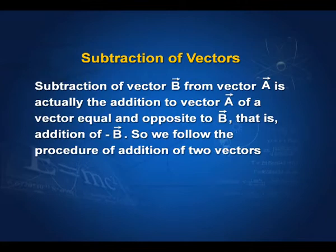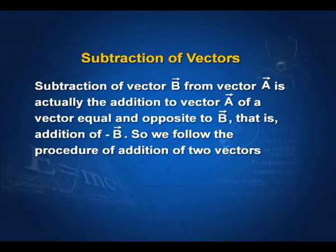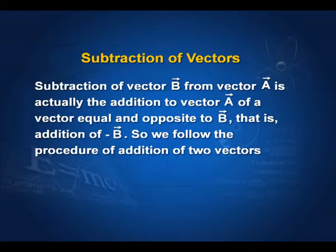Recall that in mathematics, subtraction of one number from another — say 5 from 6 — is actually the addition of minus 5 to 6. Similarly here, when I want to subtract vector B from A, I add minus B to A. Subtraction of two vectors is actually the addition of one and the negative of the other. So we follow the procedure of addition of two vectors, because subtraction is nothing but addition.